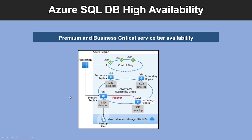The next one is Premium and Business Critical service tier availability. With Premium and Business Critical service tiers, this leverages the premium availability model, which integrates compute resources such as SQL Server Database Engine processes and storage on a single node, and the storage is always locally attached SSDs. High availability is achieved by replicating both compute and storage to additional nodes, creating a three to four node cluster.